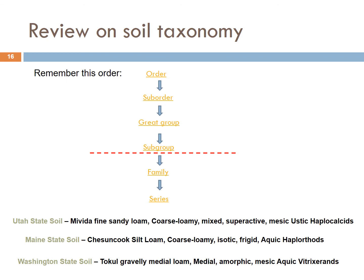The series here is Mavita. For the Maine state soil, the order is Spodosols, suborder is Orthods, great group is Haplorthods, subgroup is Aquic, and the family is silt loam, coarse loamy, isotic, frigid — series Chess and Cook. For the Washington state soil, the order is Andisols, suborder is Xerands, great group is Vitrixerands, subgroup is Aquic, family is gravelly medial loam, medial amorphic mesic, and the series is Tocul.